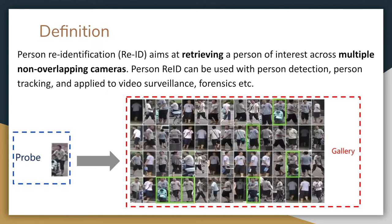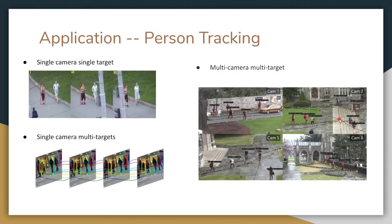Person tracking can also rely on person re-ID. If the person keeps moving, we need to find the same person among different frames. There are several classes of person tracking. First, single camera single target is relatively easy, and we don't necessarily have to use person re-ID for tracking. We can simply use a common filter for tracking.